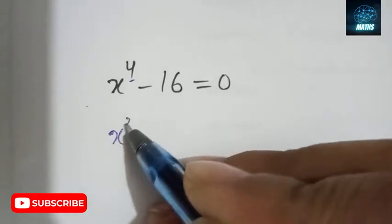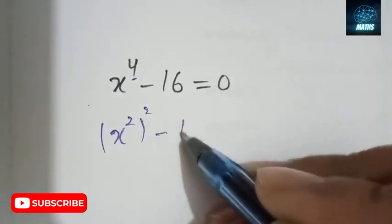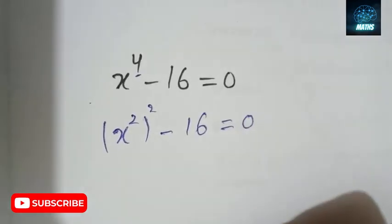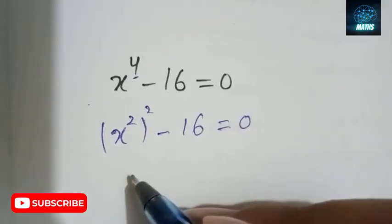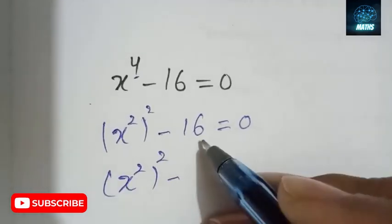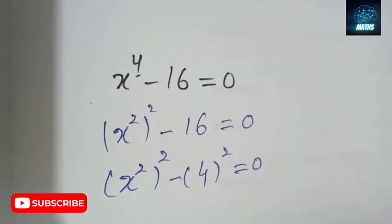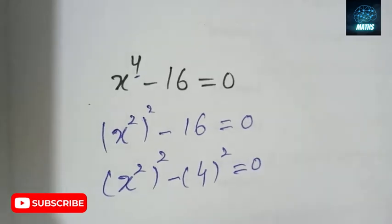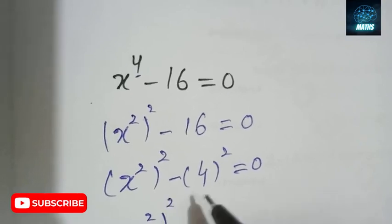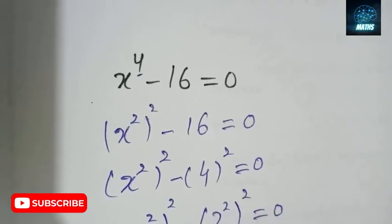Our equation is X⁴ + X²·4² - 16 = 0. Next, we can write 16 as 4², which equals 0. Then we write 4 in square form: X² minus 2² equals 0.